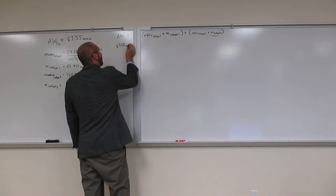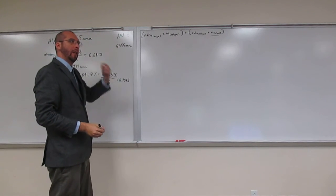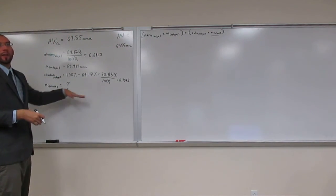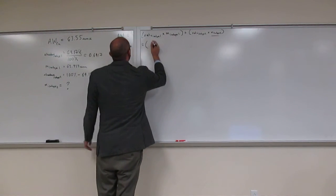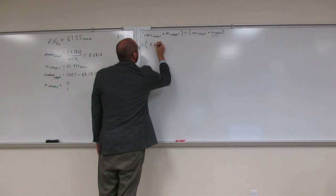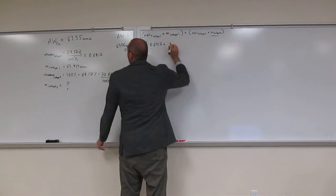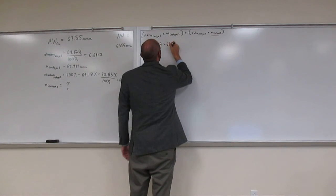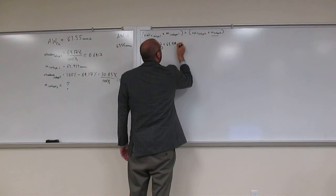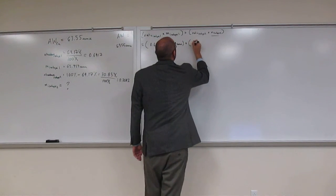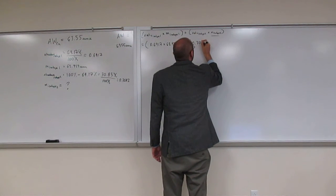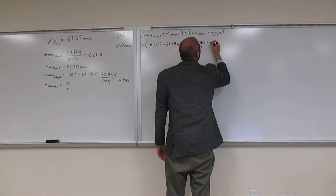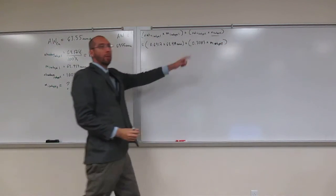Now I'm going to again use my units to remind me that in the end, right, this mass is going to be an AMU. That's a mass unit. The ratio of isotope 1, 0.6917 times the mass, 62.939 AMU plus the other ratio, 0.3083 times, we don't know, mass of isotope 2. And that's what we're looking for.